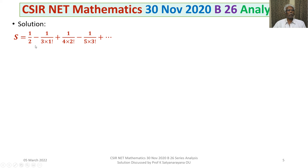Looking at the other part of the denominator — 1 factorial, 2 factorial, 3 factorial — there is nothing here, but that can be written as 0 factorial. So we have 0 factorial, 1 factorial, 2 factorial, 3 factorial, which gives us n minus 1 factorial as the general term.